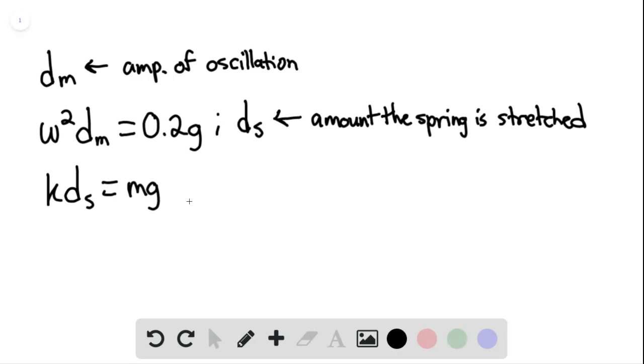We can then write this condition. We can say that the mass times the angular frequency squared times d sub s would be equal to mg, and therefore omega squared would be equal to the acceleration due to gravity divided by the amount that the spring is stretched.